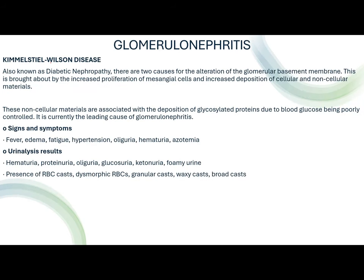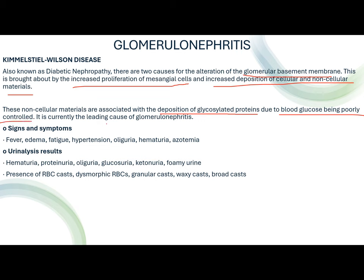Kimmelstiel-Wilson disease is known as diabetic nephropathy, very common among diabetics suffering from kidney damage. There are two causes: alteration of the glomerular membrane through increased proliferation of mesangial cells and increased deposition of cellular and non-cellular materials. The non-cellular materials are associated with deposition of glycosylated proteins due to poorly controlled blood glucose. It is currently the leading cause of glomerulonephritis. Signs include fever, edema, fatigue, hypertension, oliguria, hematuria, and azotemia. Urinalysis: hematuria, proteinuria, oliguria, glucosuria, ketonuria, foamy urine, RBC casts, dysmorphic RBC, granular, waxy, and broad casts.